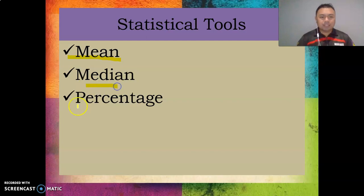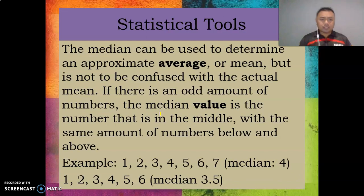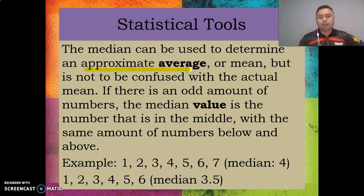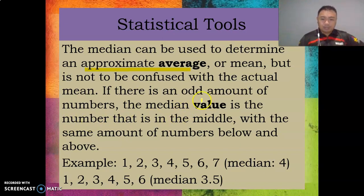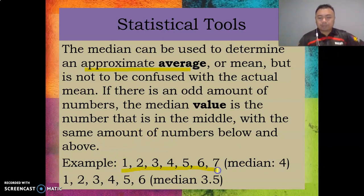We'll be discussing the mean, the median, and the percentage. Let's start with median. Median can be used to determine the approximate average or mean, but don't confuse it with the actual mean. If there is an odd number of values, the median is the number in the middle — for example, one, two, three, four, five, six, seven — the median here is four because it's in the middle.